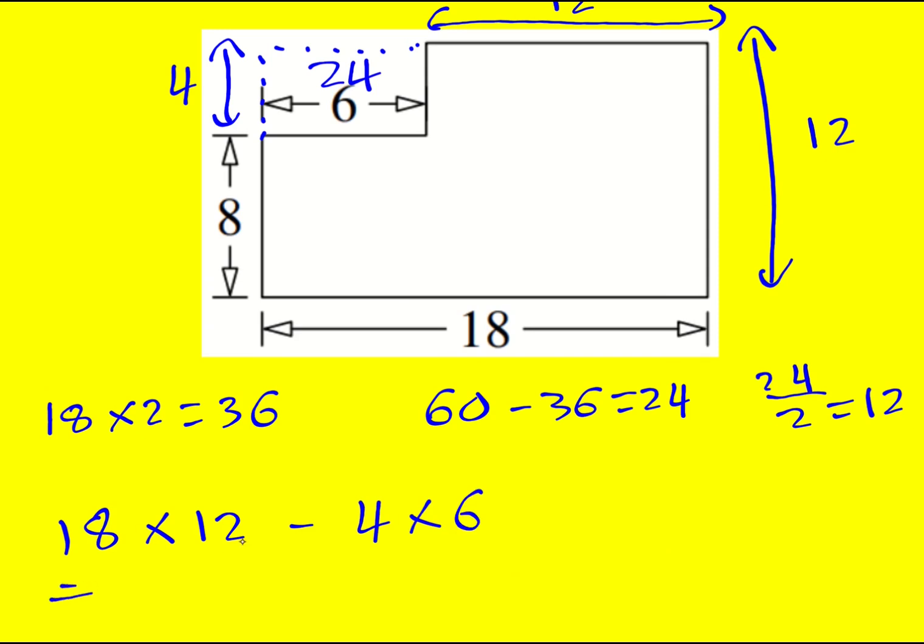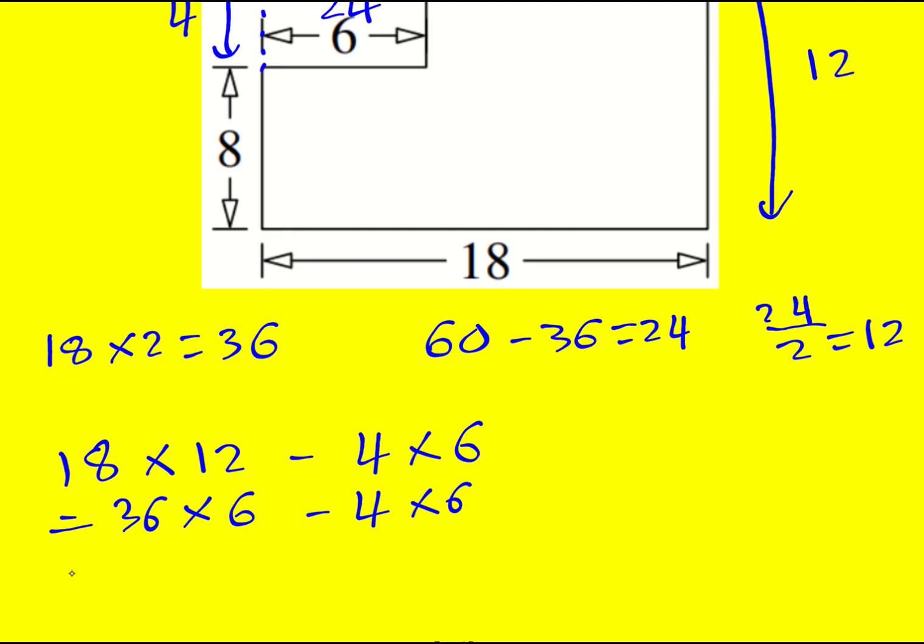You could work this out, but with a little rejigging we can do it even easier. 18 times 12, I can double the 18 to 36 and halve the 12 to 6, so it's 36 lots of 6 minus 4 lots of 6. That's going to be 32 lots of 6, which is quite easy to calculate, maybe a little bit easier than 18 times 12 for example.